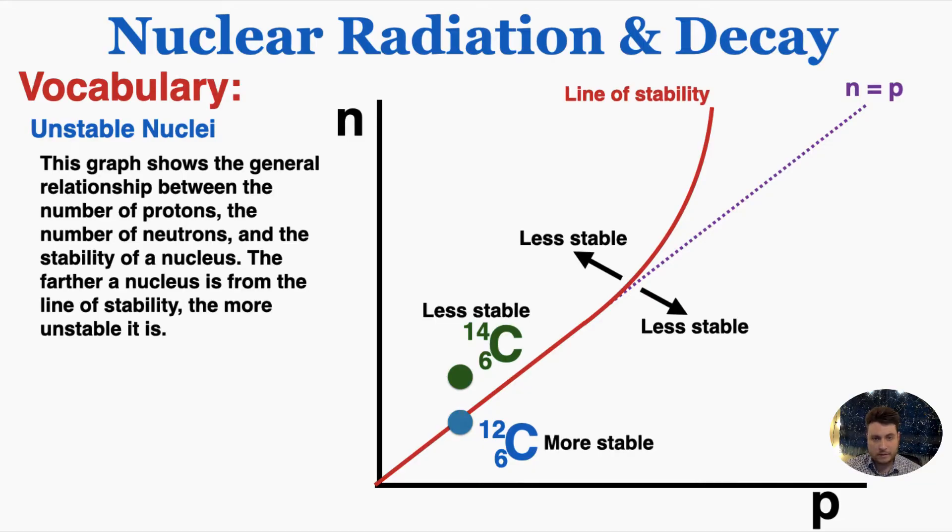We can compare this to uranium with 92 protons. The most stable isotope of uranium is uranium-238, which means it has 146 neutrons and only 92 protons. If we decrease the number of neutrons to uranium-235, that's actually less stable than uranium-238 because it's farther away from the line of stability.